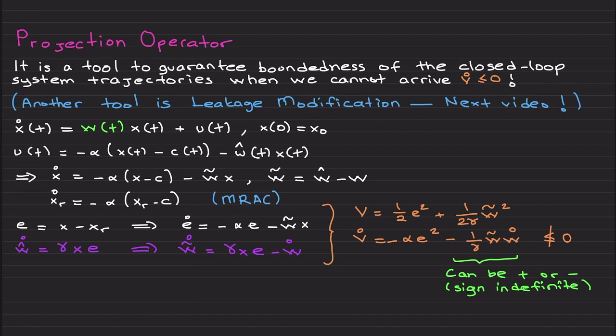Before we move into higher dimensional systems, I need to teach you two important topics. One of them is the projection operator. The projection operator is a tool to guarantee boundedness of the closed-loop system trajectories when, in the stability analysis, you cannot arrive at v̇ ≤ 0.